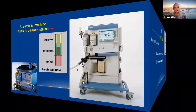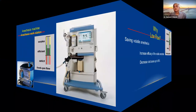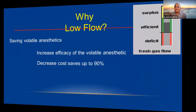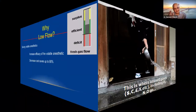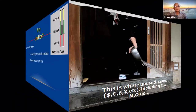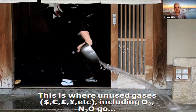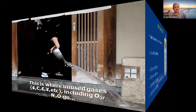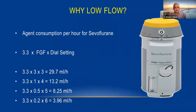We want to use low flow to save volatile anesthetics, increase their efficacy, and reduce cost. At high flow, you're wasting precious oxygen, nitrous oxide, and volatile agents — essentially throwing money down the drain. Agent consumption per hour for sevoflurane is given by: 3.3 × fresh gas flow (L/min) × dial setting. For example, at 3 L/min fresh gas flow with a dial of 3, you consume about 30 ml/hour.